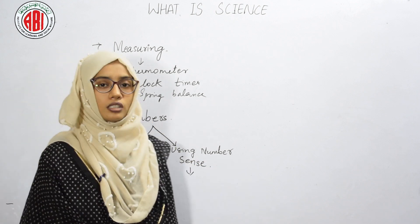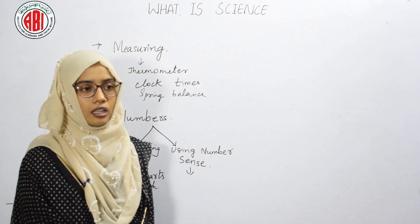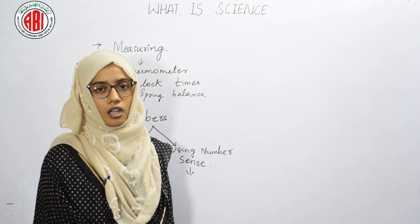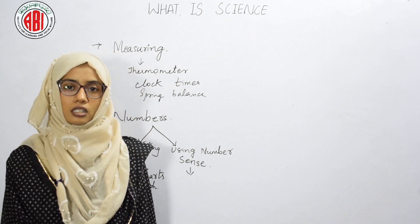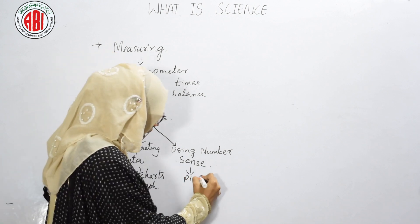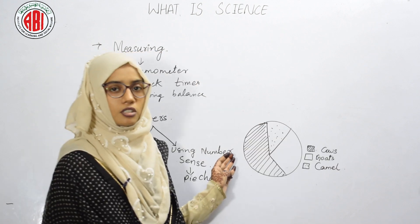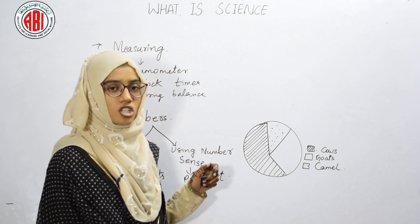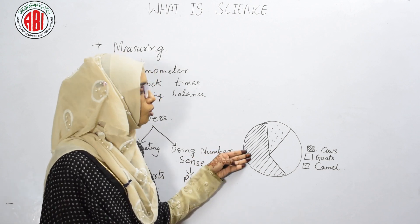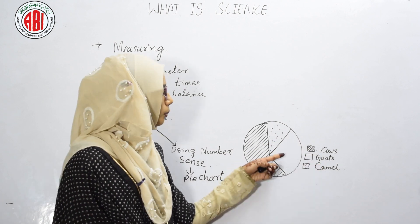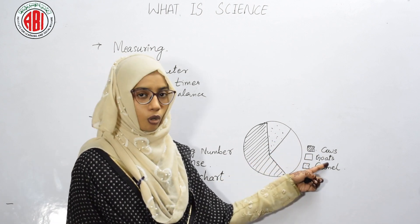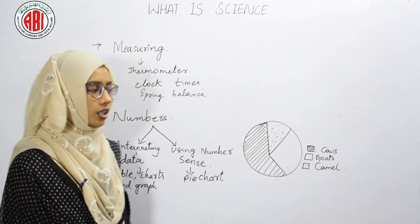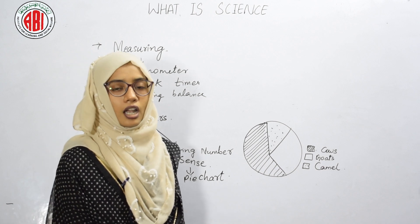Using number sense: good scientists have math skills that can be used to display results after their investigation. For example, they use a pie chart. By observing this pie chart, we can interpret the information easily — the lined portion represents the number of cows, the plain portion represents the number of goats, and the dotted portion represents the number of camels. Therefore, it is an easy way to interpret data and show investigation results.